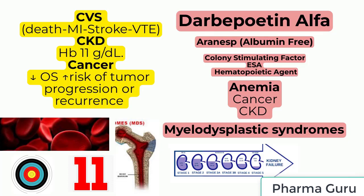No trial has identified a hemoglobin target level, darbepoetin alpha dose, or dosing strategy that does not increase these risks. As a result, use the lowest darbepoetin alpha dose sufficient to reduce the need for red blood cell transfusions. In cancer patients, erythropoiesis stimulating agents shortened overall survival and increased the risk of tumor progression or recurrence in clinical studies. To decrease these risks, use the lowest dose needed to avoid RBC transfusions, and use erythropoiesis stimulating agents only for anemia from myelosuppressive chemotherapy. They are not indicated for patients receiving myelosuppressive chemotherapy when the anticipated outcome is cure.